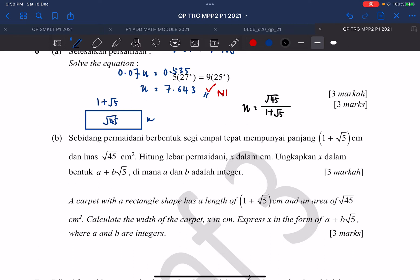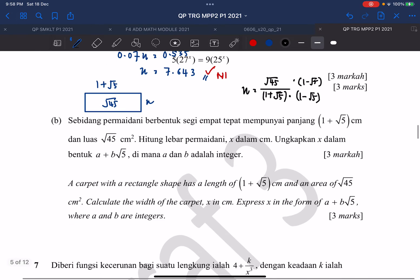Okay, then we will continue to rationalize. First, we need to rationalize our denominator. We can't have a surd in our denominator. So we times the whole thing with 1 minus root 5, and we times the same thing, 1 minus root 5 on the above.